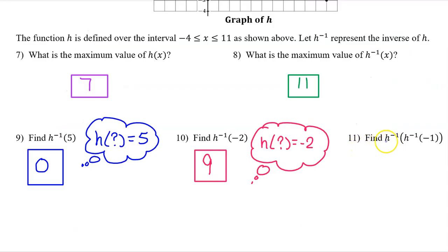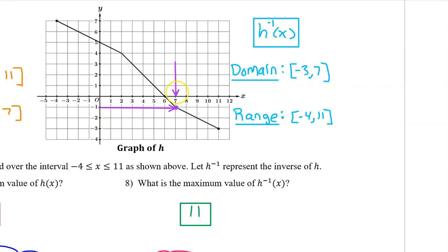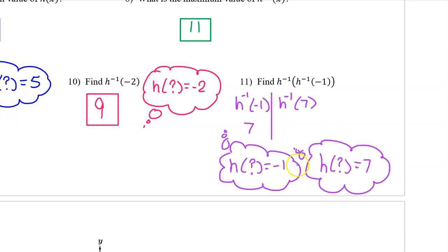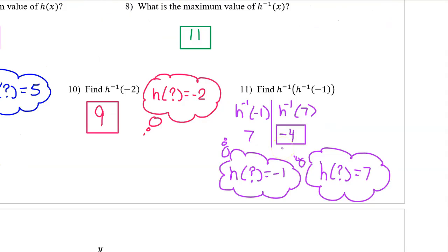Number 11: for this nested notation, we work from the inside out. So we begin with h inverse at negative 1. Ask yourself, h at what is negative 1? We can see that h at 7 is negative 1. Next, we move on to the outer function, which is another h inverse. This time we do h inverse at the 7 we just found. h at what is equal to 7? We see that h at negative 4 is 7. So that's the answer for number 11.